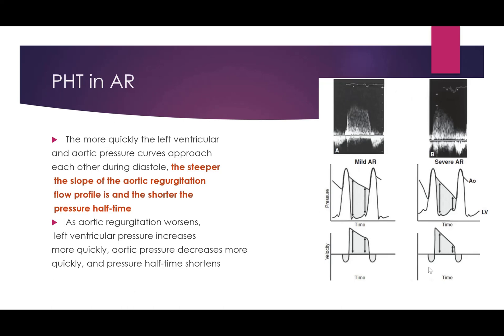In aortic regurgitation, the relationship is the opposite of mitral stenosis. We plot the aortic pressure and LV pressure curves. In severe AR, the slope of the aortic regurgitation flow profile is steeper compared to mild AR. A steeper slope means a shorter pressure halftime, so as the severity of aortic regurgitation increases, the pressure halftime reduces.